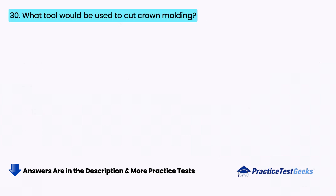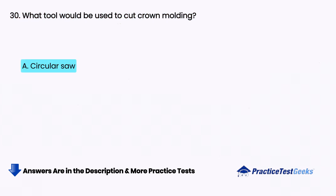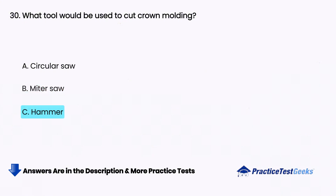What tool would be used to cut crown molding? A. Circular saw, B. Miter saw, C. Hammer, D. Planer.